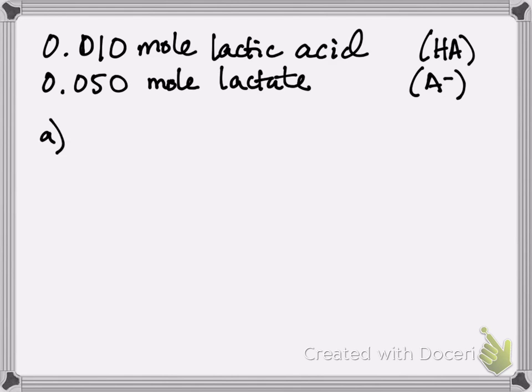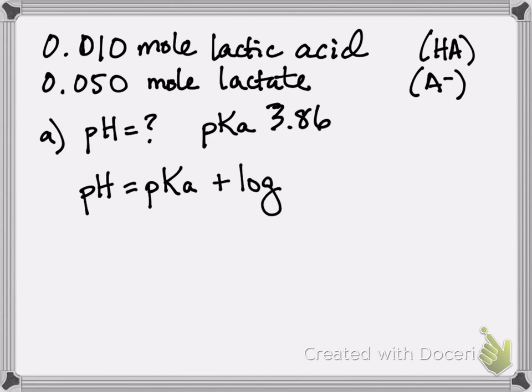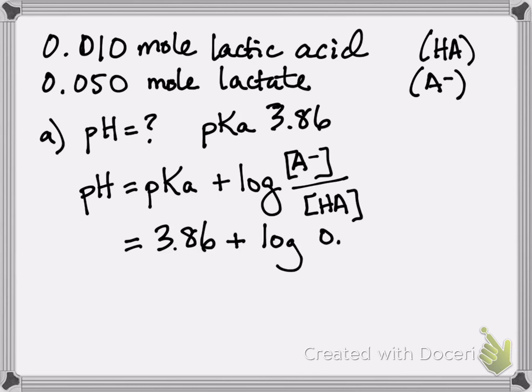And the first part of the problem is pretty straightforward. You're just asked to calculate the pH. You're told that the pKa of lactic acid is 3.86. So we can go to the Henderson-Hasselbalch equation and figure out the pH of our particular solution. Put in 3.86 for the pKa and we put in 0.050 for the conjugate base, 0.010 for the acid.